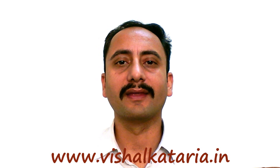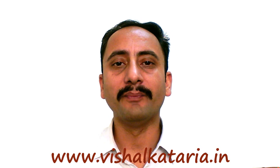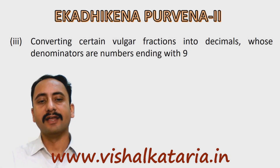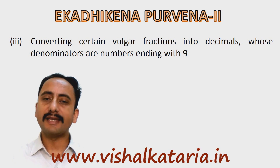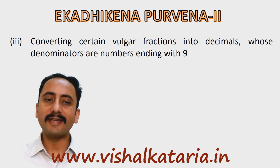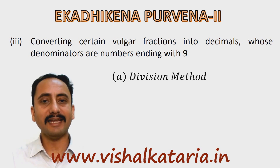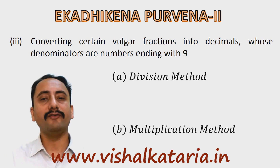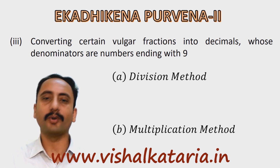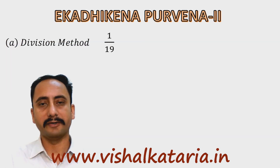Welcome back. In this video we are going to discuss another application of Ekadhika Purvena — how to convert vulgar fractions into decimals whose denominator ends with 9, for example 1/19, 5/69, and so on. We can do it in two different ways: the first method is known as the division method and the second is the multiplication method. We will discuss both methods one by one.